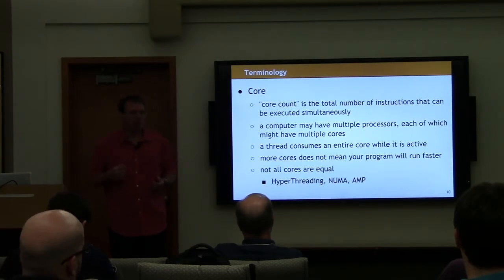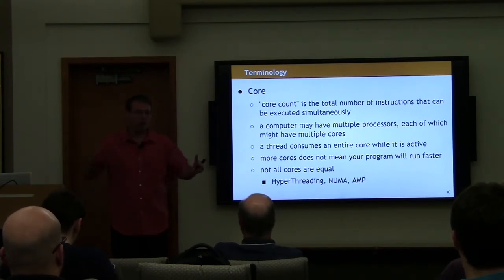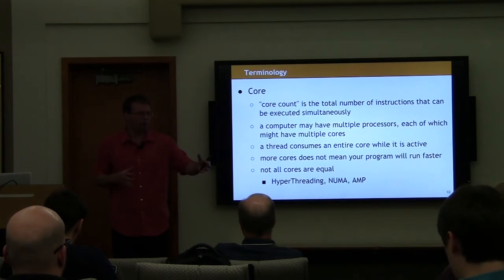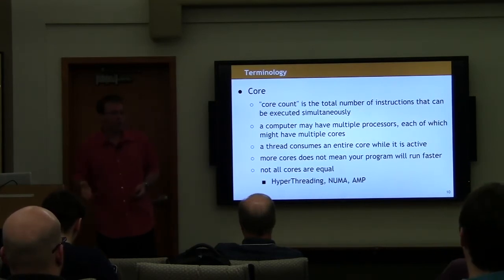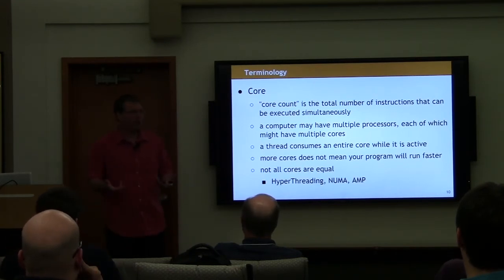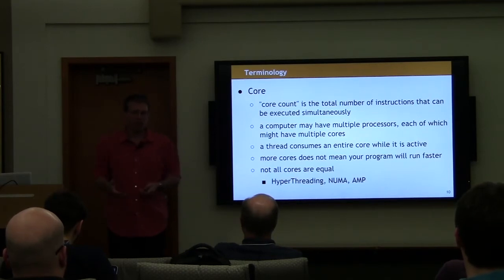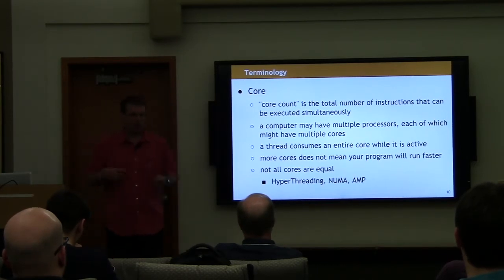In some environments, cores are not equal. Terms that come up include hyperthreading, where cores can be siblings of one another, or NUMA — non-uniform memory architecture — where a certain core might be farther from one piece of memory than another. Also becoming more common in the mobile world is AMP, asymmetric multiprocessing, where you might have a processor with eight cores and four are very fast and four are not. This is not addressed as straightforwardly in the C++ threading library.